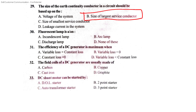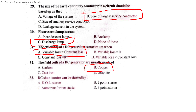The fluorescent lamp is a discharge lamp. The efficiency of a DC generator is maximum when variable loss equals constant loss. The field coil of a DC generator is on the field.